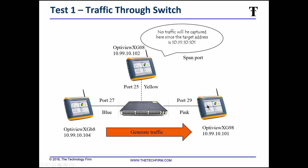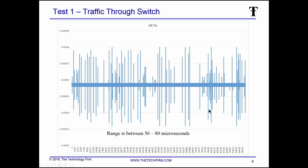Next, I'm generating traffic through a regular switch with no mirror, no span, nothing. I capture when traffic leaves and when it arrives, just like the back-to-back test. You can see a somewhat wonky pattern — remember the scale is in microseconds, so don't freak out. This is kind of what you'd expect, with a range of about 56 to 80 microseconds.